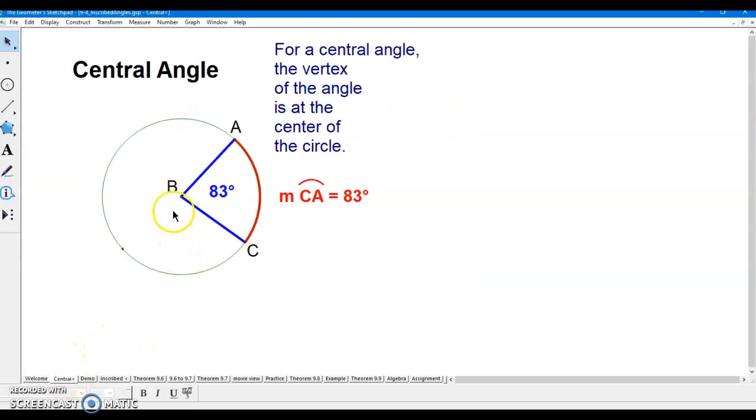A central angle has its vertex at the center of a circle, and the measure of that central angle is exactly the same as the measure of the arc. Like this red arc is 83 degrees of the circle, and the central angle is 83 degrees. That relationship is important to understand.